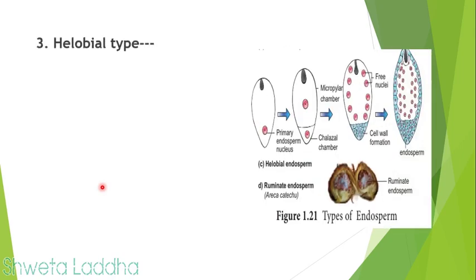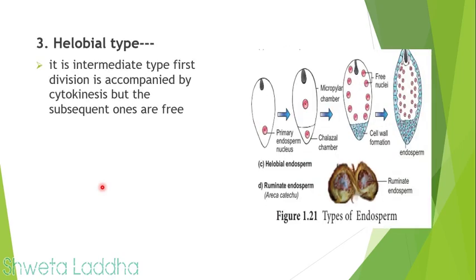The third type is helobial type, occurring in the helobial family. It is an intermediate type. The primary endosperm nucleus first divides into a two-cell stage: the smaller chamber is the chalazal chamber, towards the chalazal end, and the larger chamber is the micropylar chamber, towards the micropylar end. Only the first division involves karyokinesis followed by cytokinesis.